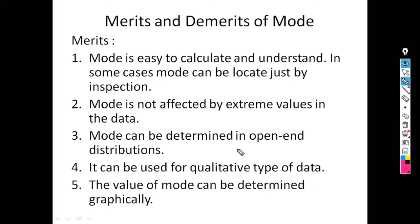Mode can be used for qualitative types of data. This is an advantage over arithmetic mean, which cannot be used for qualitative data — so this drawback is overcome in mode. Also, the value of mode can be determined graphically using the histogram.